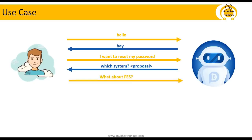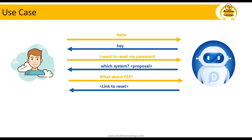Sam says: 'I would like to change it in my FES system.' The robot immediately extracts the detail about which system the password change is requested for and sends the correct link to Sam. Sam is a happy person — even at an airport, he can consume this application on mobile devices since we will have integration with the UI5 application. He can get his password reset at any point of time.